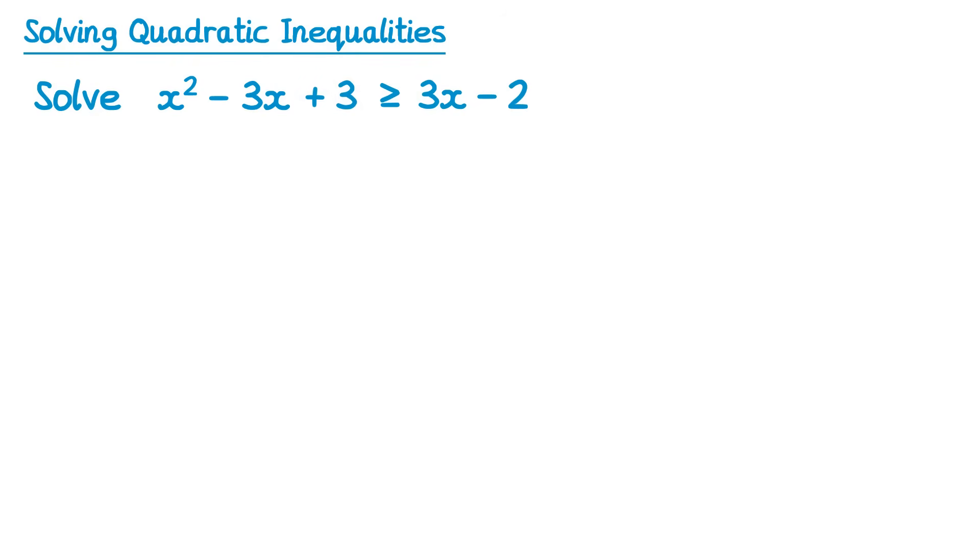In this final example there are two extra differences. Firstly, the symbol is now a greater than or equal to. This isn't going to change our approach, we just need to remember to write the extra little line. This will be the same if it was less than or equal to. The second though will change. We have 3x minus 2 on the right hand side, where we're used to having 0, so we need to eliminate those terms before we begin. To do this we will subtract 3x and add 2 to the right hand side, and then do the same to the left hand side.